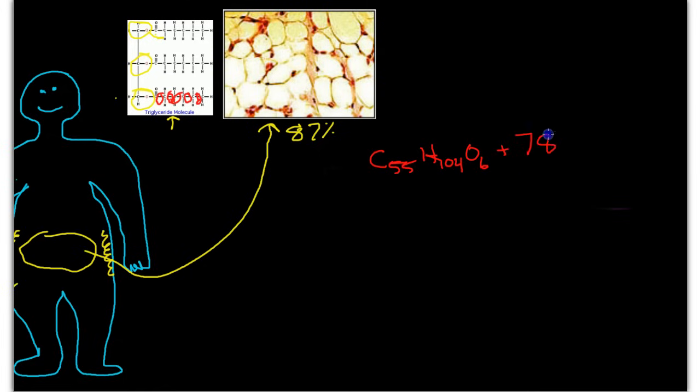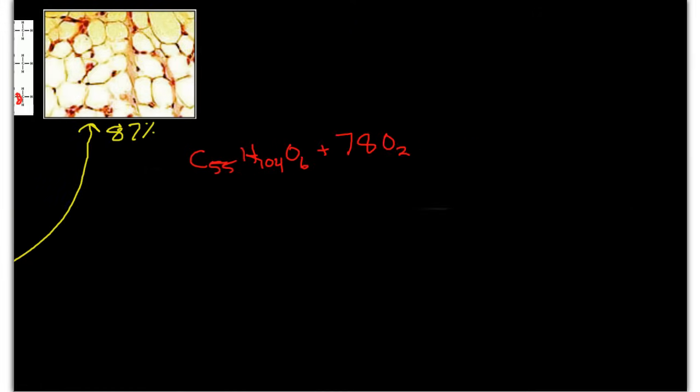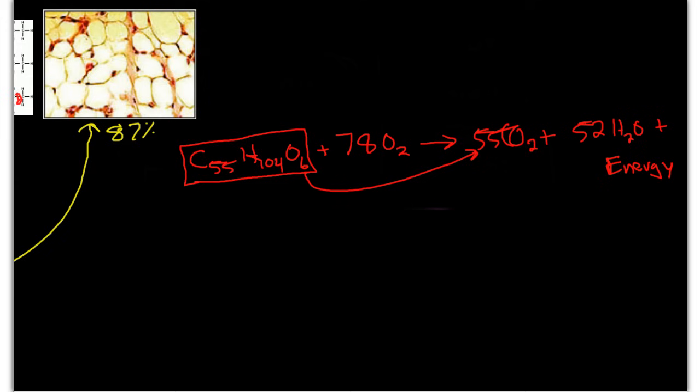So we need to add 78 oxygens and then this makes 55 carbon dioxide plus 52 molecules of H2O and then plus energy. The energy is stored in the high energy bonds of this large and complex molecule. When it gets broken down it is released. That's how the body stores the energy.